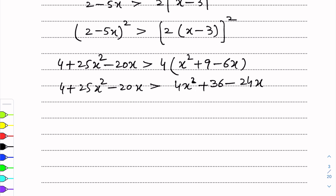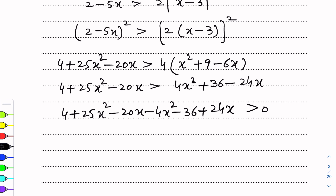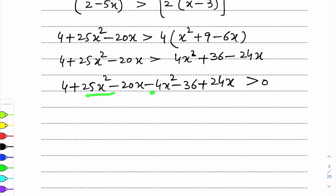Bringing all terms to the left side, the signs will change. We get: 4 plus 25x squared minus 20x minus 4x squared minus 36 plus 24x is greater than 0. Now we will simplify it by collecting the like terms, and we get 21x squared plus 4x minus 32 is greater than 0.